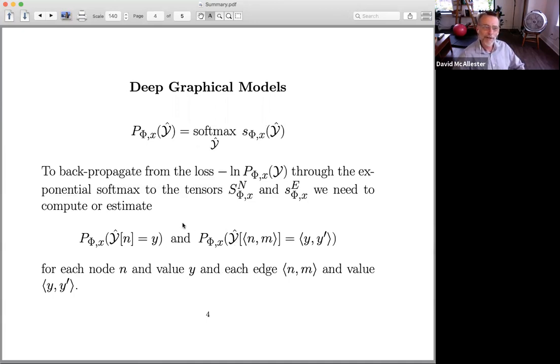Now I said this exponential softmax was difficult to compute, and in spite of it being difficult to compute, we can prove that we can do the back propagation if we can compute the probability under the exponential softmax that a given node has a given label, and we need to do that for all nodes and all labels.